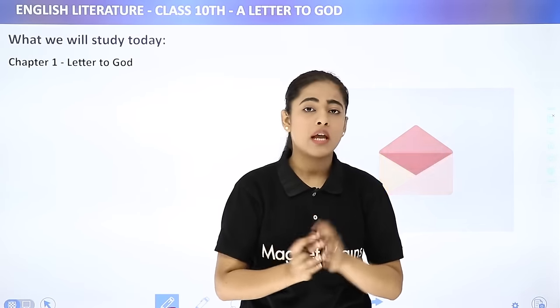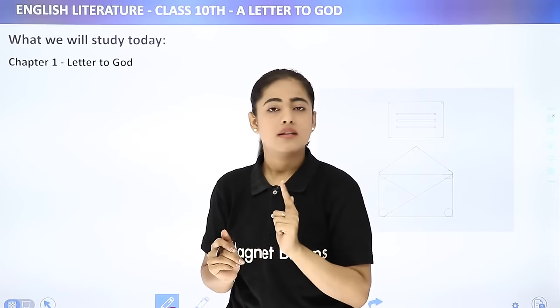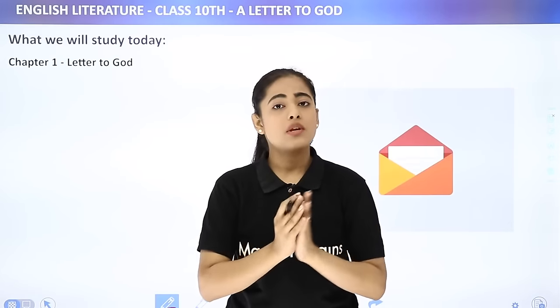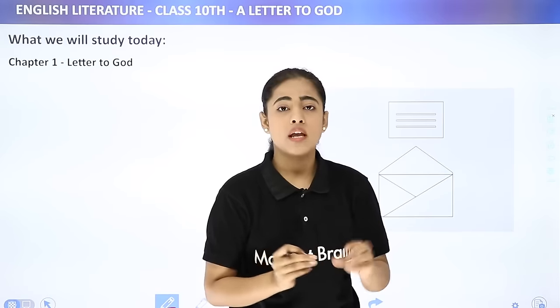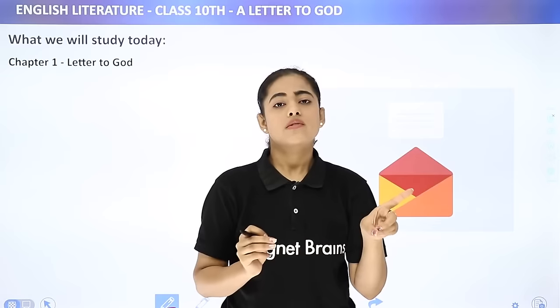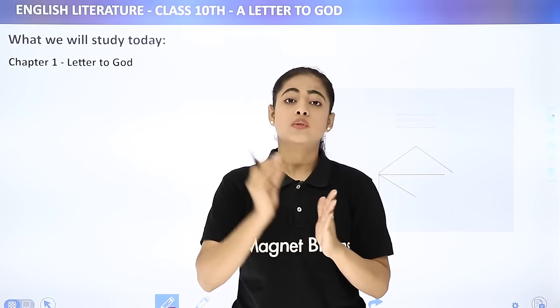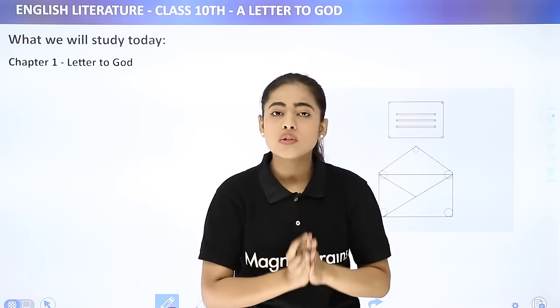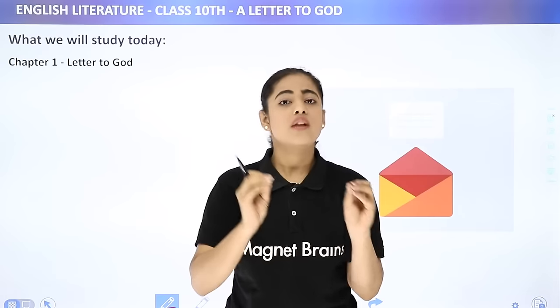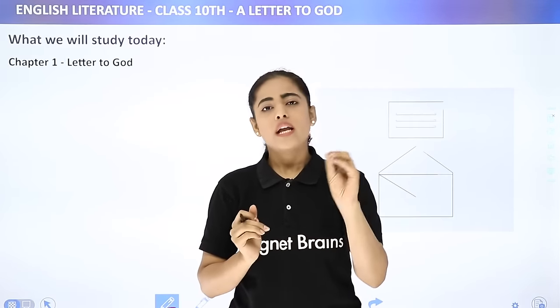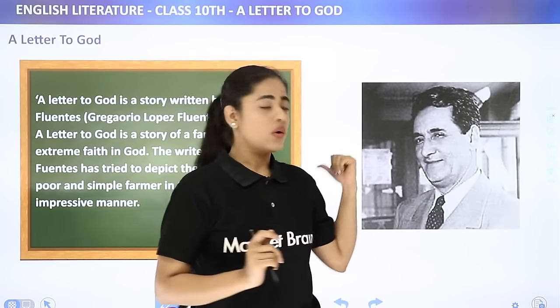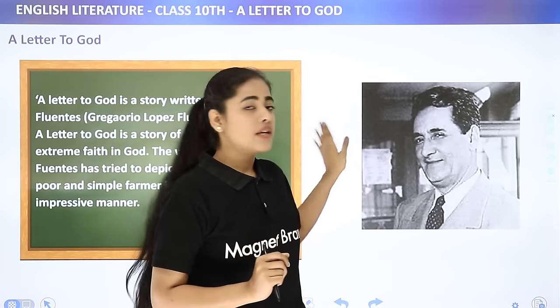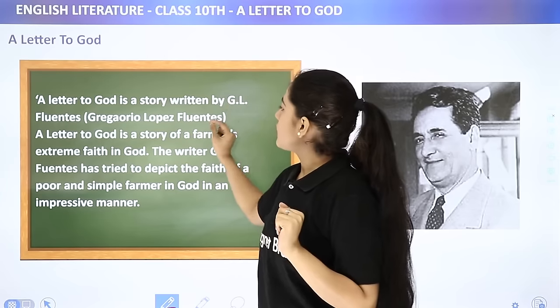At the end of this chapter you have two poems: 'Dust of Snow' and 'Fire and Ice.' These poems will be covered separately in a separate video. For now, this video focuses on the chapter itself. Let's begin with the story — first, let's read about the author. The chapter 'A Letter to God' is written by G.L. Fuentes, whose full name is Gregorio Lopez Fuentes.